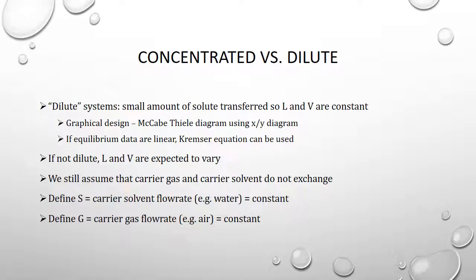Thus far in the course, we've talked about what happens when we have dilute systems. That means the amount of solute in the liquid or vapor fed to the system is small enough that we can assume the flow rates of liquid and vapor are approximately constant. We call those capital L and V — the molar flow rates of liquid and vapor into the system. If we can assume that, it's possible to do a graphical design using the McCabe-Thiele diagram to determine the concentration leaving each stage and calculate the number of stages required. It's very similar to distillation, although we don't have a separate feed and we only have one operating line, so it's a little simpler.